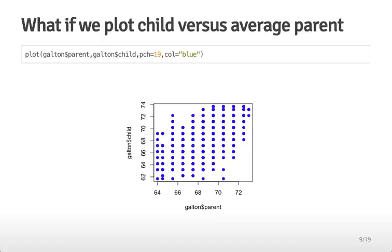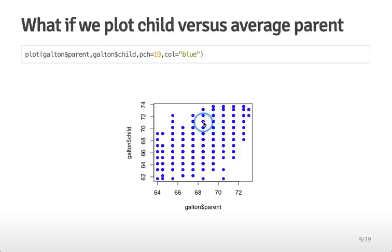If we knew more information — say the mid-parent height — we might be able to get a better prediction or summary of the child height distribution. Plotting mid-parent height versus child height shows a nice oval-shaped scatter with a clear relationship between the two variables. Each point doesn't represent just one observation though; the points are stacked because Galton didn't record heights to many significant digits.